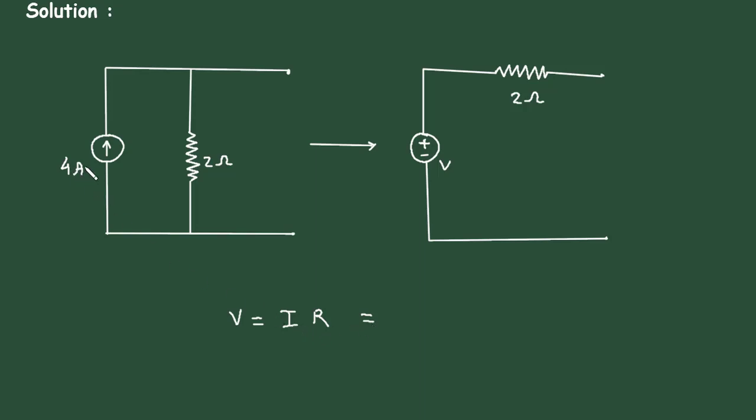The value of current I is 4 Ampere and the value of resistance is 2 Ohm. So this will be 4 into 2 is 8 and since it is voltage so its unit will be volts.